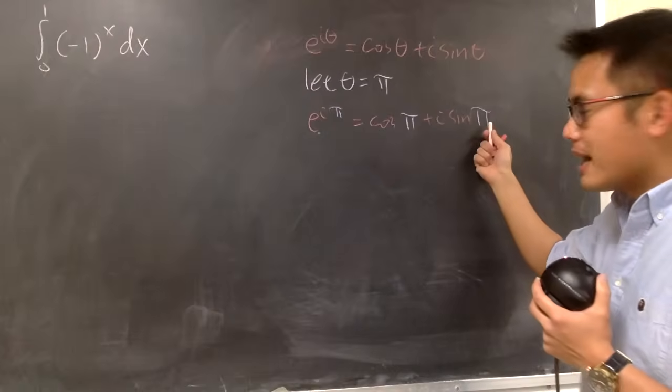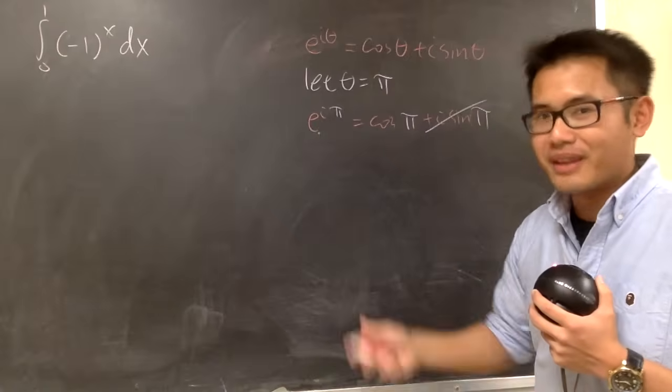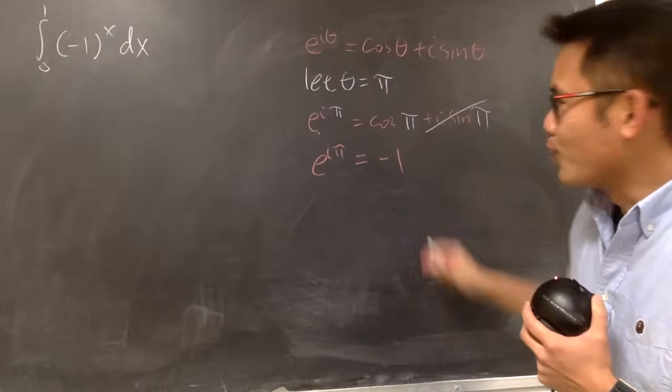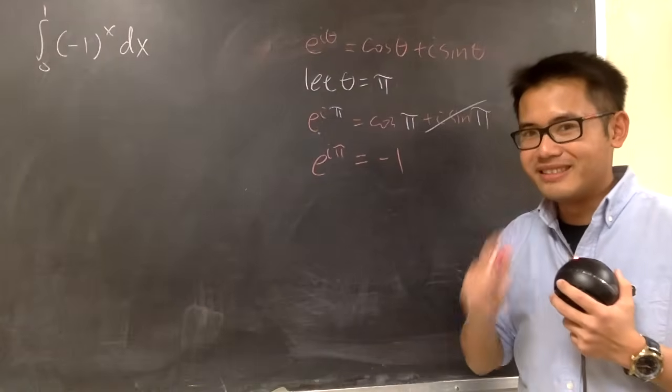Okay, sine of pi is zero. i times zero, this part is gone. This right here is negative 1. So in another word, e to the i pi equals to negative 1. This is the famous Euler's identity, isn't it?